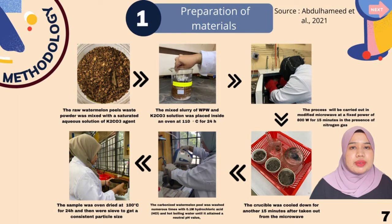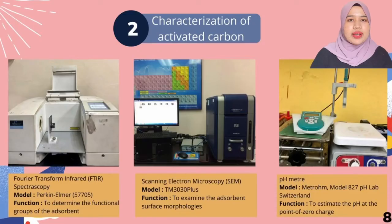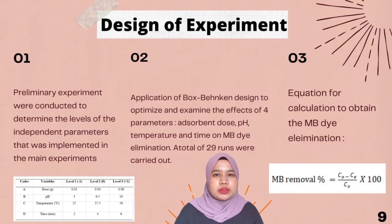Then, the carbonized watermelon peel was washed numerous times with 0.1 molar hydrochloric acid and hot boiling water until it attained a neutral pH value. The sample was oven dried at 100 degrees Celsius for 24 hours and then sieved to get a consistent particle size. The next step is characterization of activated carbon using FTIR spectroscopy, scanning electron microscopy, and pH-PZC test. Preliminary experiments were conducted to determine the levels of the independent parameters implemented in the main experiments using BBD. The parameters are absorbent dose, pH, temperature, and time on methylene blue dye elimination.